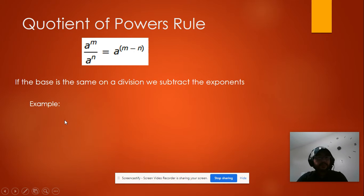Let's see an example. We got x to the a power divided by x to the 4 power. Since the base is the same, we're just going to subtract the exponents, a minus 4. So my simplified expression will be x to the 4 power.